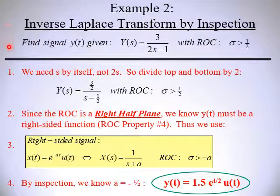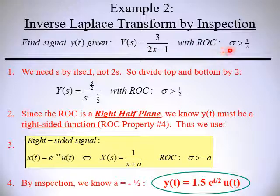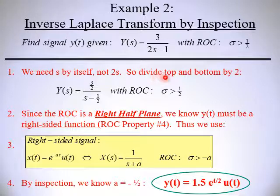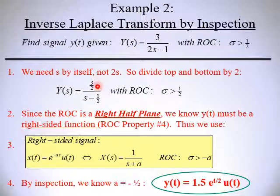Let's look at one that's a little bit different. Suppose we're given the Laplace transform Y(s) equal to 3 over 2s minus 1, with the region of convergence sigma greater than one half. Our goal is to find y(t) in the time domain. The issue here is that s is not by itself. We remedy that by dividing the numerator and denominator by 2, giving us 3/2 on top, s by itself, and minus one half in the denominator.